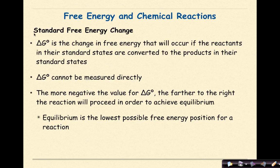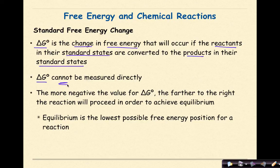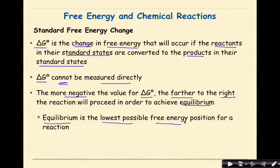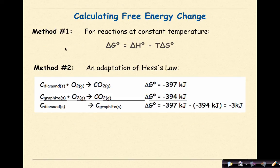Free energy and chemical reactions — Standard Free Energy Change. Delta G naught is the change in free energy that will occur if the reactants in their standard states are converted to the products in their standard states. Delta G naught cannot be measured directly. The more negative the value for delta G naught, the farther to the right the reaction will proceed to achieve equilibrium. Equilibrium is the lowest possible free energy position for a reaction. Method one: for reactions at constant temperature, you can use the formula delta G naught equals delta H naught minus T delta S.